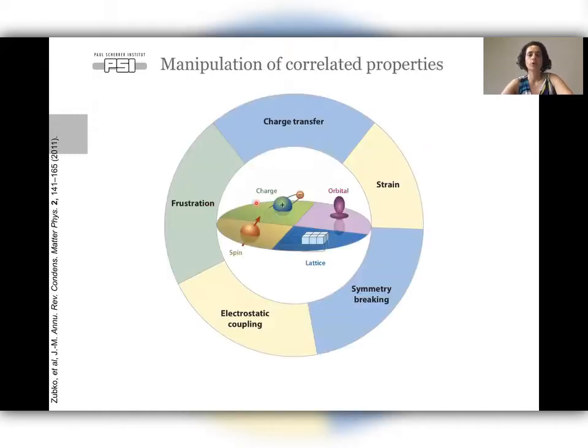We would like to work with correlated systems which are very interesting because they show the correlation between different types of ordering. You can have a coexistence between charge, magnetic, orbital ordering, or a lattice transition, for example, a structural transition. And often these orderings are correlated to each other and are driving one another.